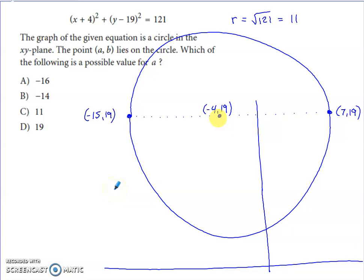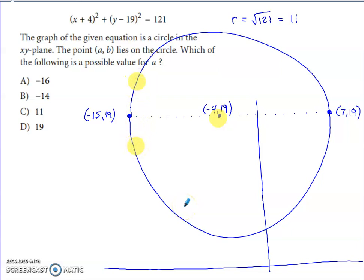A is the X-coordinate of a point on the circle. The smallest X-coordinate on the circle is −15 and the largest is +7, found by going 11 units left and right from the center at −4. An X-coordinate of −16, 11, or 19 would fall outside the circle. But −14 is within the valid range, so of the options given, −14 is the only possible value for A.